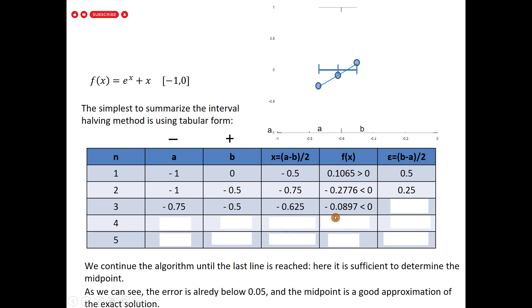At step 3, f(-0.625) ≈ -0.0089, and the error is 0.125. We are getting closer to the required error. Since the function is negative, we delete the left side again.